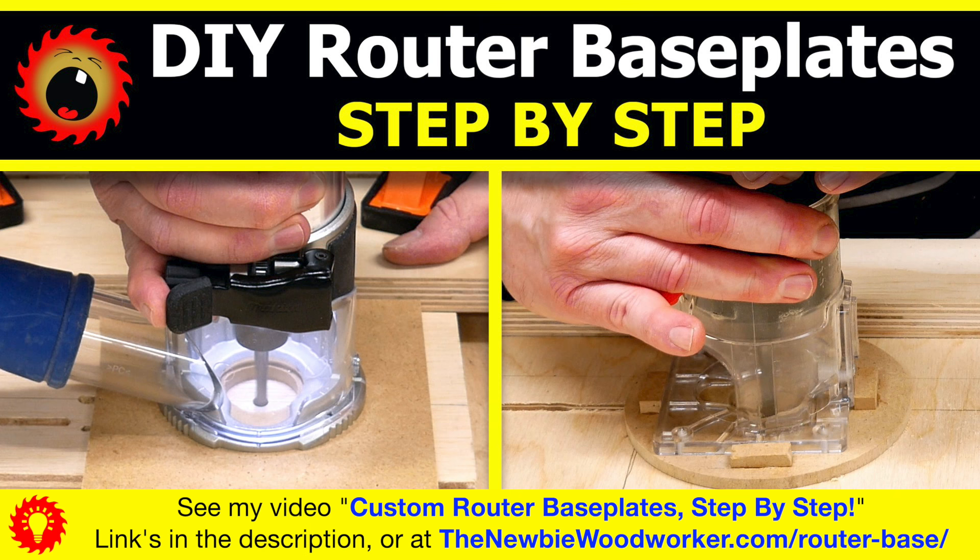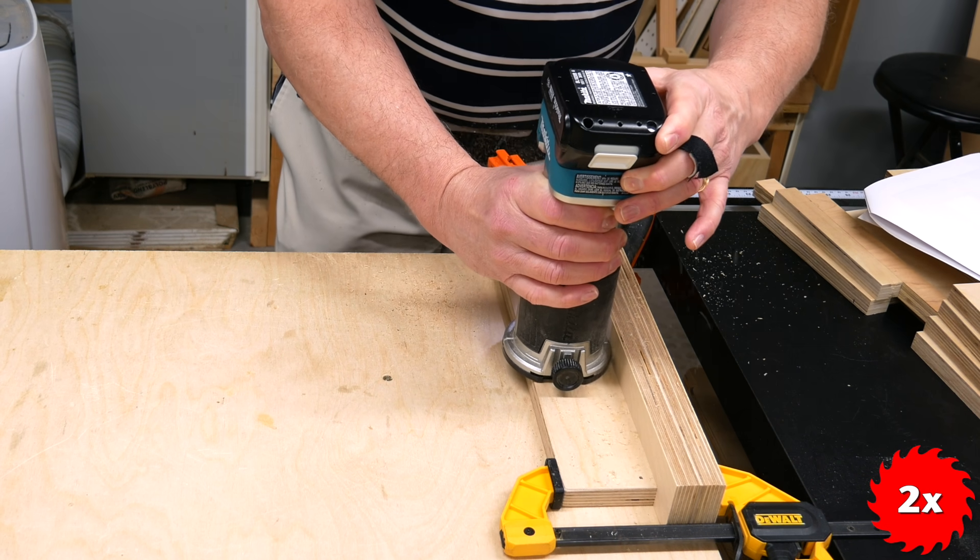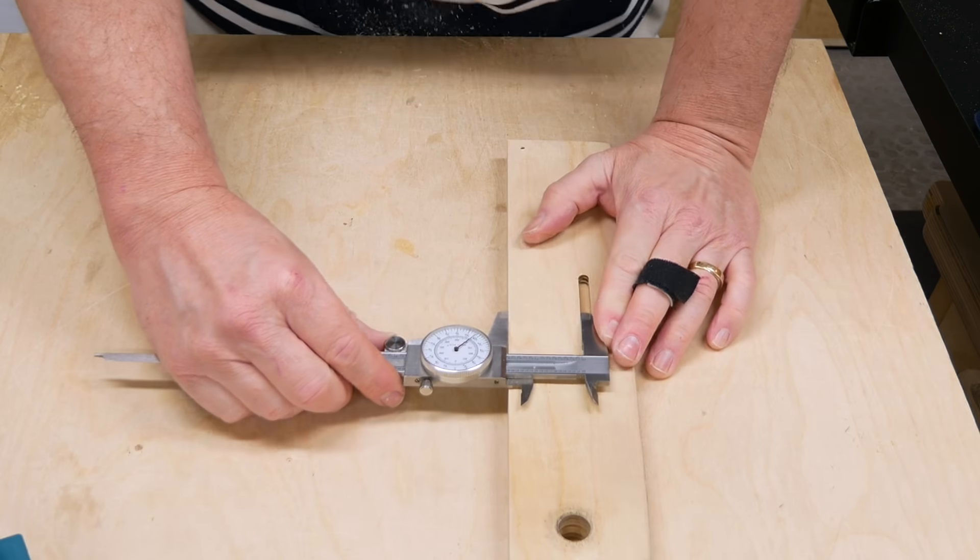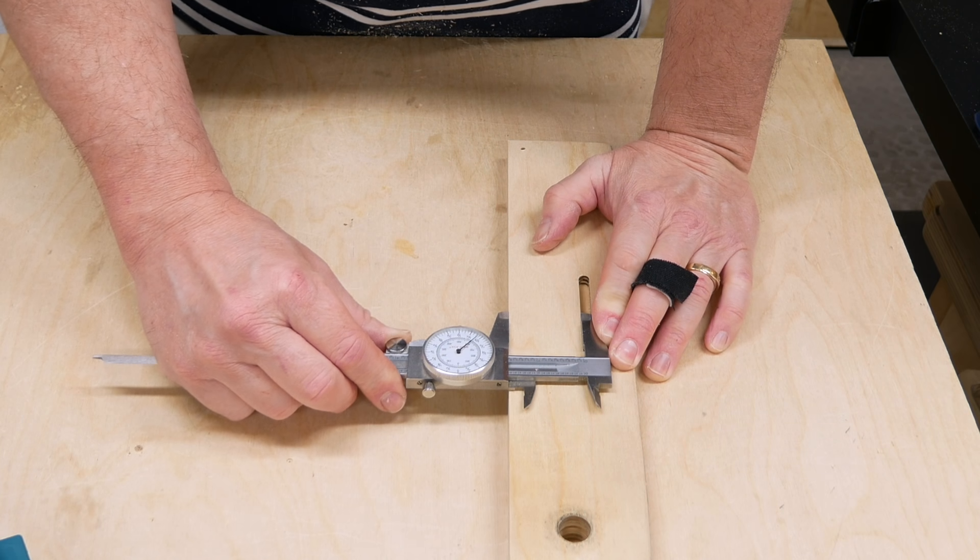So if you have an odd-shaped router base, consider watching my video on how to make a symmetrical base plate. But you can also figure it out by cutting a short groove. Measure the distance from the edge to the start of the cut, and add half the diameter of whatever bit you used.